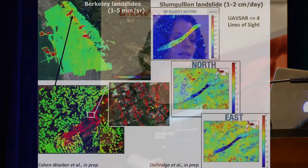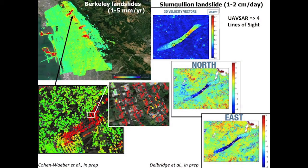These are some examples of looking at landslides with InSAR from the Berkeley group — with the slow-moving landslide in Berkeley, and also the fast-moving Mongolian landslide — where we can extract different components of the velocity from the UAVSAR.